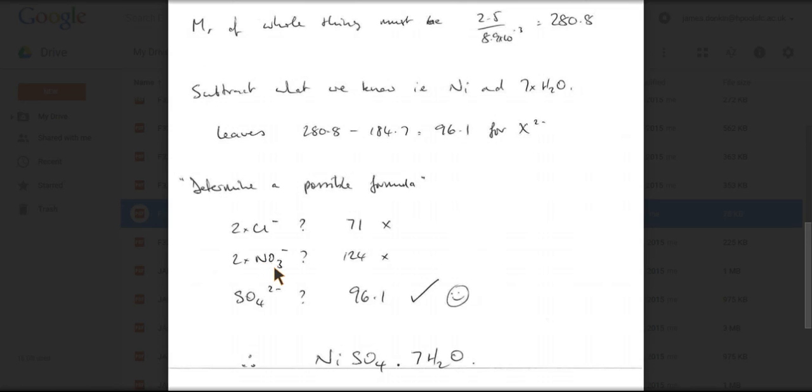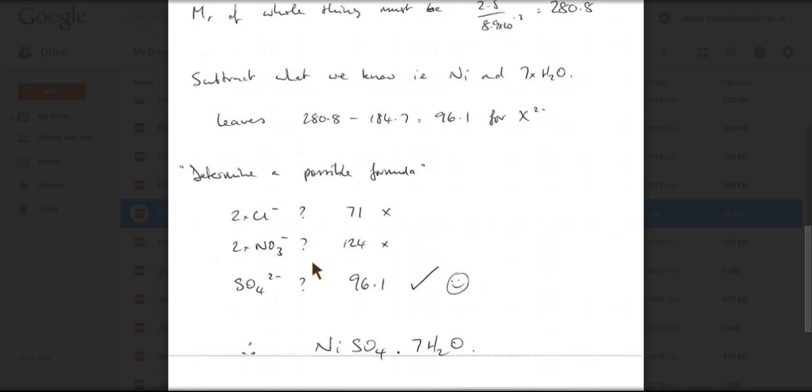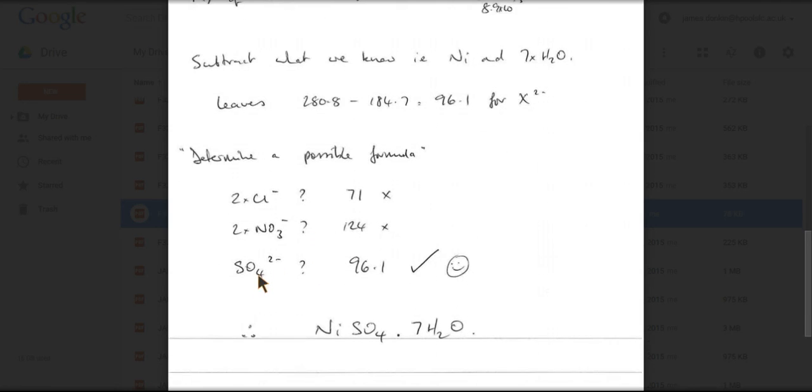So then you could come up and think about other negative ions. Could it be carbonate? No, that's the wrong mass. And then you get to sulfate, SO4 2 minus. And sure enough, that has a mass of 96.1. So that is obviously the answer.